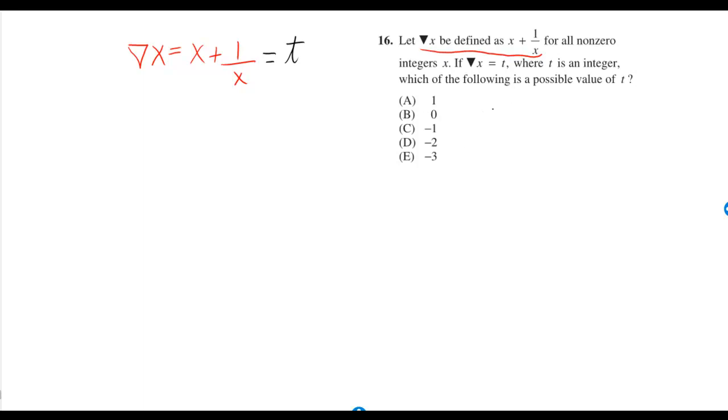So they told us both x and t are integers. If we want t to come out to be an integer, what kind of integers can we plug in for x?